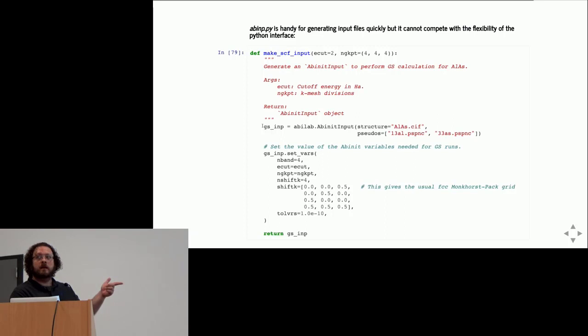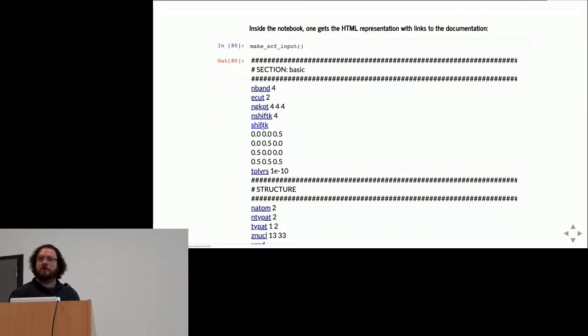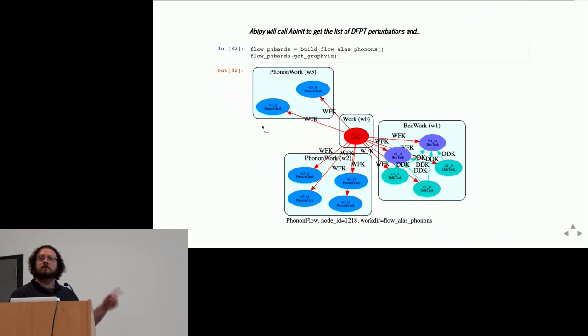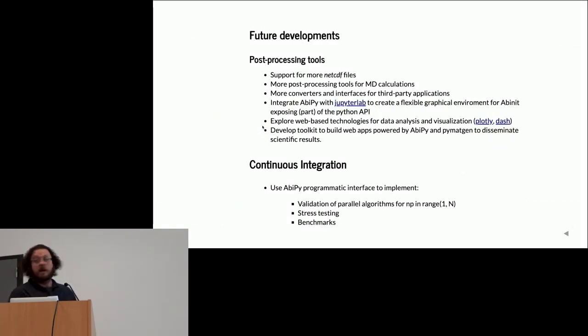This is how we build input files directly in Python. As you can see, we try to maintain an approach that is as close as possible to the input file. This is essentially a dictionary mapping variable names to values. Once you have an input file, you can visualize it inside the Jupyter notebook. There are also factory functions that allow you to generate workflows automatically. I start from an SCF input and then I create a workflow for phonon calculation with this q-mesh, including Born effective charges. This is the workflow that you get with all the input files and directories that are automatically created, and then you can start to run the calculation automatically.